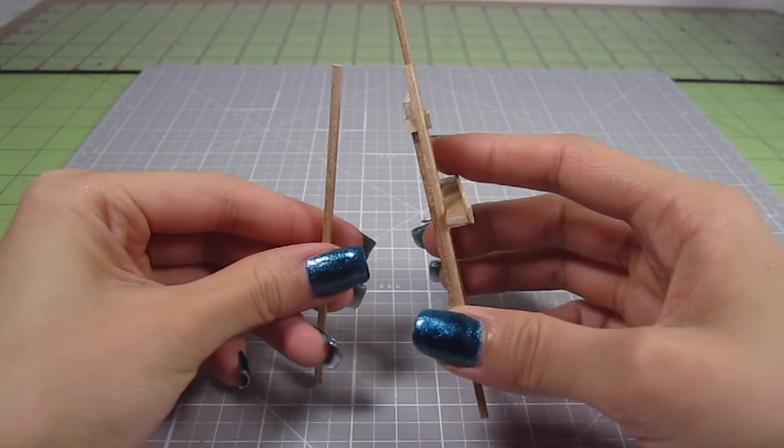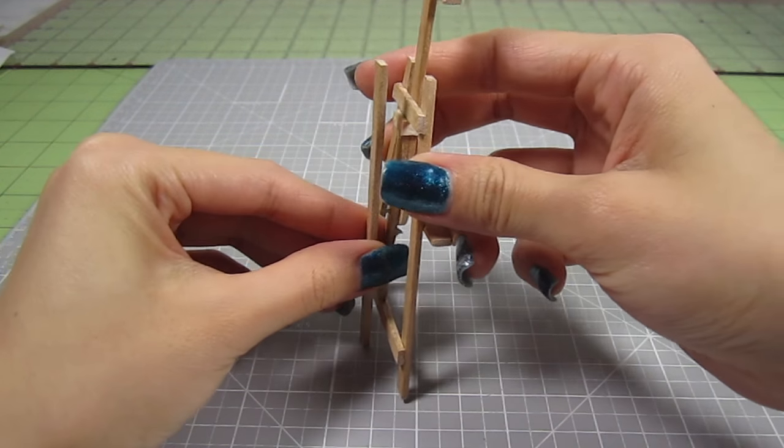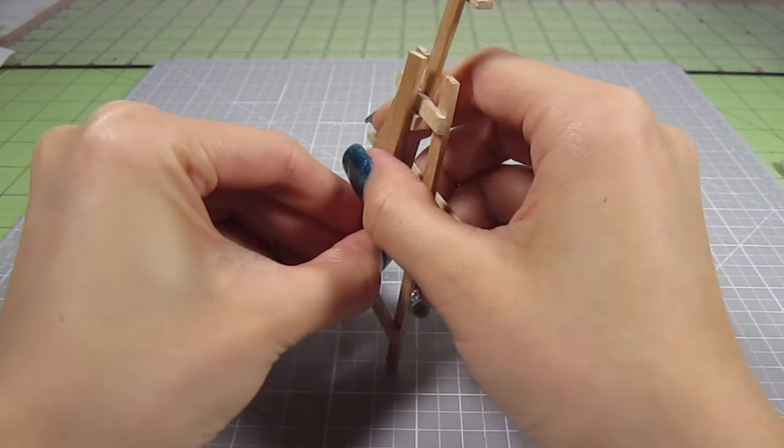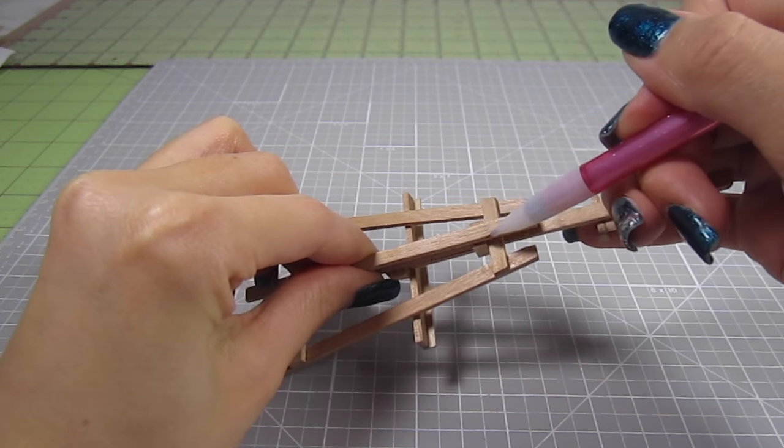Finally, you can add on the last piece, the folding back leg. Grab that last 3 ½ inch piece of popsicle stick and line it up against the back of the easel. Mark where it meets that top 1 inch piece and cut that off.